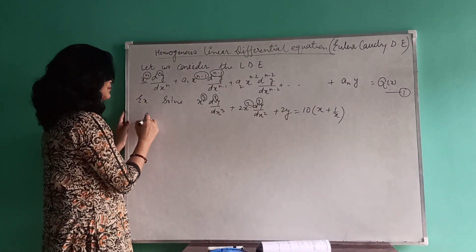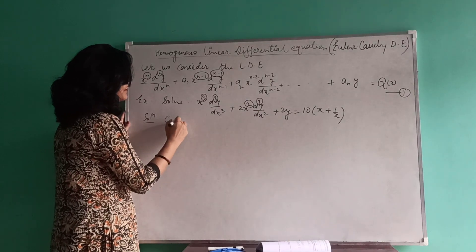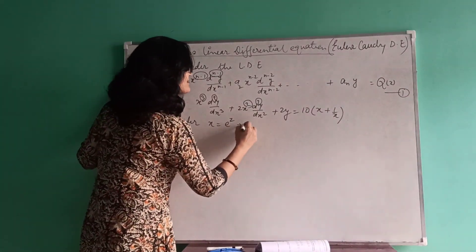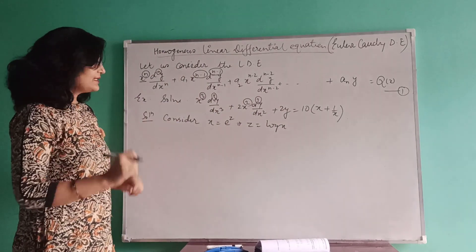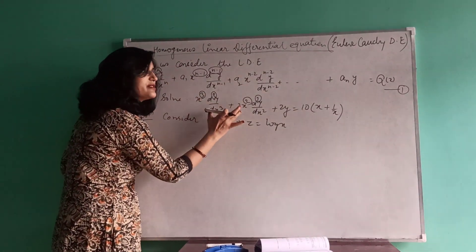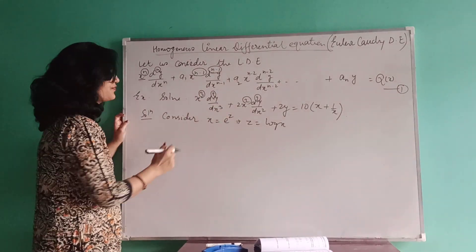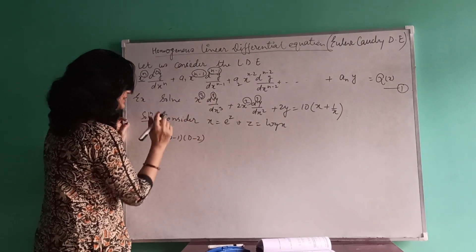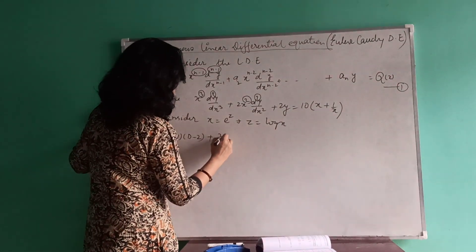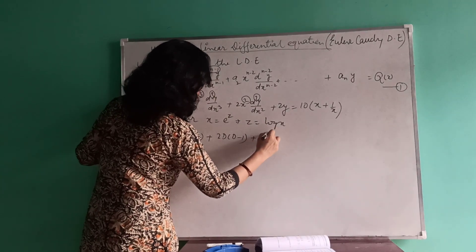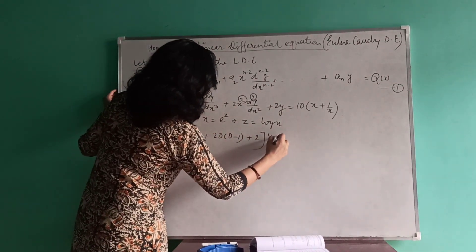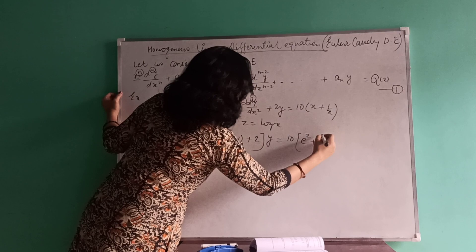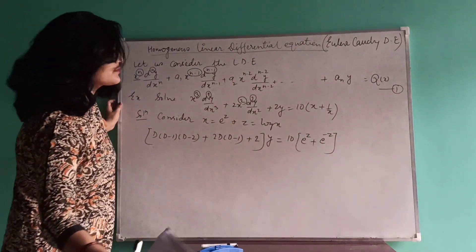Now move further. Step 1: substitute x equals e to the power z, which implies z equals log x. Then we have to reduce this differential equation to a linear differential equation with constant coefficients. For the order-3 term we use D(D minus 1)(D minus 2); for the order-2 term, D(D minus 1); and in place of x we write e to the power z, so 1 upon x becomes e to the power minus z.